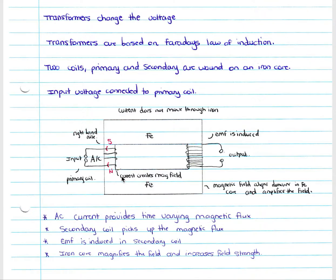By the alternating current, this provides time-varying magnetic flux. We know that current causes a magnetic field around the current-carrying conductor, and that magnetic field varies as your current changes direction — therefore changing your magnetic flux. The magnetic field given off by your current-carrying conductor aligns the domains in your iron core and amplifies the magnetic field.